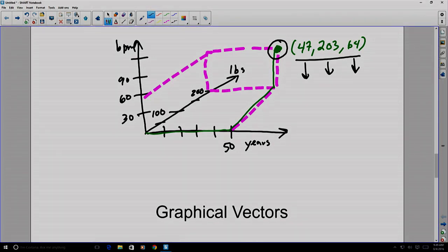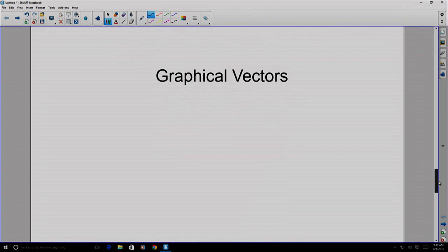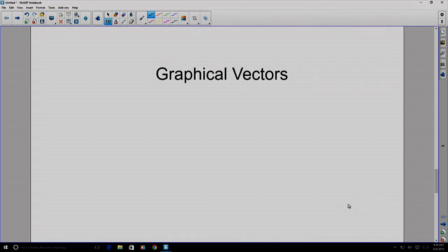Well, another way to describe a location in space is to use a graphical vector. And by that, I mean to describe any location in space, we can actually draw an arrow from some origin. So if we have some location in space, we create some basis, some origin, some starting point, and then we draw an arrow that points to it. And this is a graphical vector.